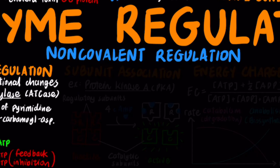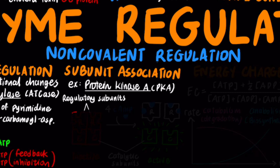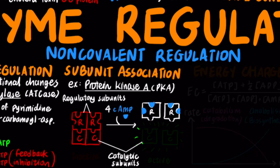Some enzymes are regulated by subunit association and dissociation. For example, protein kinase A contains two regulatory subunits and two catalytic subunits. Normally, the regulatory subunits are bound to the catalytic subunits, inactivating them. When cyclic AMP binds to the regulatory subunits, they dissociate from the catalytic subunits, which become activated.